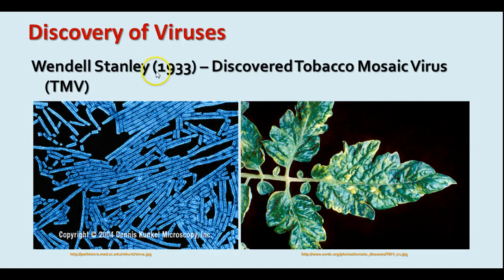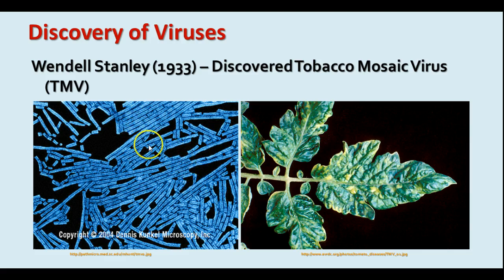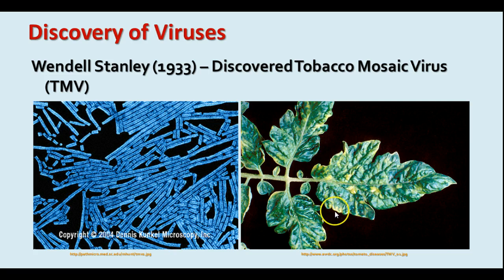Viruses were discovered in 1833 by a man named Wendell Stanley. One of the first ones discovered was the tobacco mosaic virus. It looks like a long rod-shaped thing — actually that's a spiral capsid structure around the nucleic acid core. This causes a disease of tobacco plants called tobacco mosaic, and it basically makes little dead areas in the leaves, making them unusable.